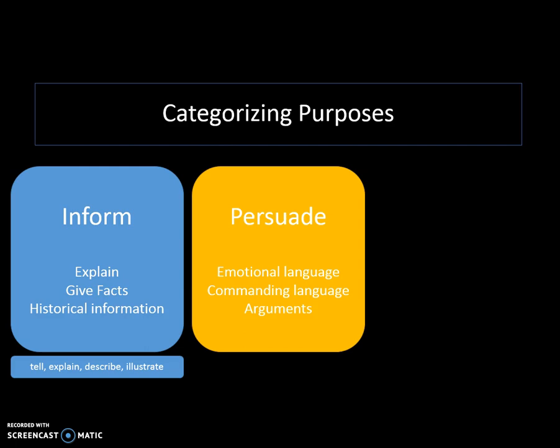For example, newspapers, media, speeches, and letters to the editor are just a few. Key words you'll often see in a persuasive piece of writing include words like convince, encourage, urge, and argue. Often times they'll use exclamation points, bold language, or even dramatic questions to try and convince you that their position is right.